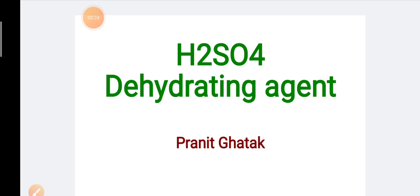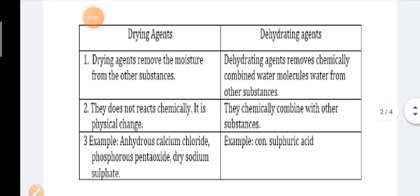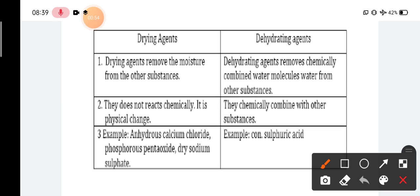Today we will discuss what is a dehydrating agent and sulfuric acid acting as a dehydrating agent. Before we start, we need to know the difference between a drying agent and a dehydrating agent. I have provided a comparative chart for this. A drying agent removes moisture from other substances.